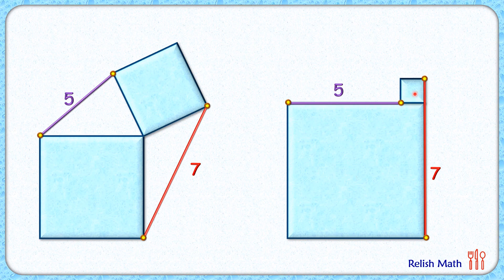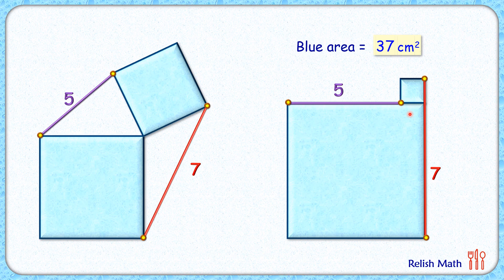So the area will be 36 + 1, or the total area of the blue region is 37 square centimeters, and that's our answer. I hope you enjoyed the solution. I will see you in the next video. Till then, tata, bye bye.